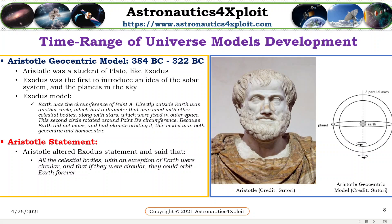Aristotelian geocentric model: Aristotelian was a student of Plato like Exodus. Exodus was the first to introduce an idea of the solar system and the planets in the sky. His model stated that heart was the circumference of point A. Directly as her heart was under the circle, which had a diameter that was lined with other celestial bodies, along with stars, which were faced in outer space. This second circle rotated around point B's circumference. Because heart did not move and had planets orbiting it, this model was both geocentric and homocentric.